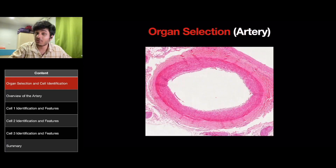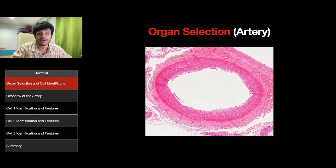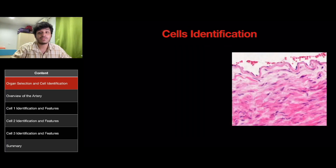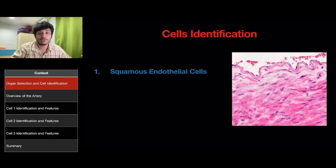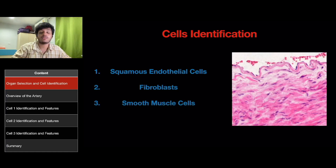This is the slide that I'll be examining and the organ that I've chosen is the artery. There are three cells that I'll be identifying today: the first one will be the squamous endothelial cells, the second one will be the fibroblasts, and the third one will be the smooth muscle cells.